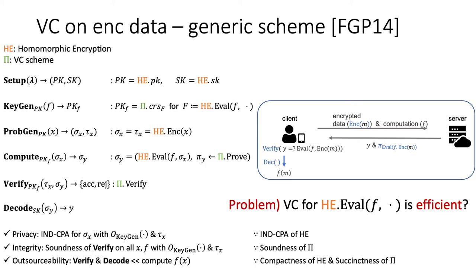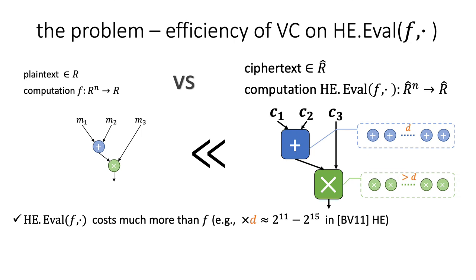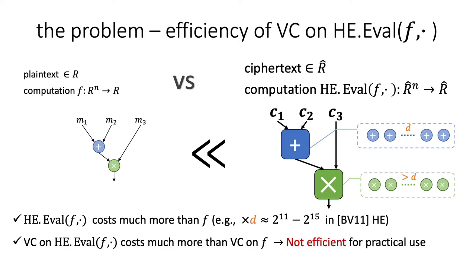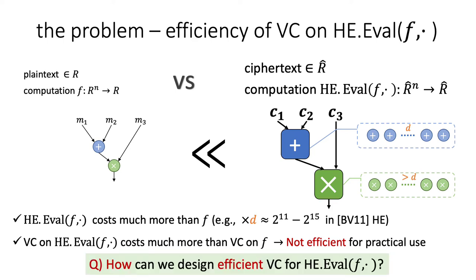The main problem is that VC for FHE computation must be efficient. In homomorphic encryption, the ciphertext is much bigger than the plaintext, and computation on ciphertext is also much heavier than on the plaintext. For example, in the BV homomorphic encryption scheme, ciphertext operations are at least d times bigger than those on the plaintext, and this d can be 2^11 or 2^15. Therefore, if we apply VC on homomorphic encryption directly, it is also d times more costly than VC on plaintext, making the overall VC scheme on encrypted data not efficient for practical use. It is thus inevitable to design an efficient VC for homomorphic encryption computation.